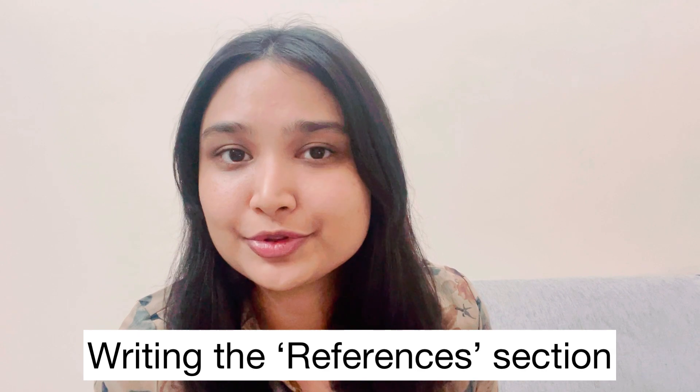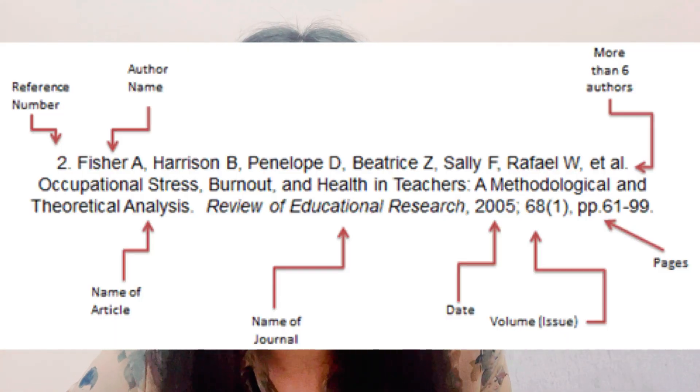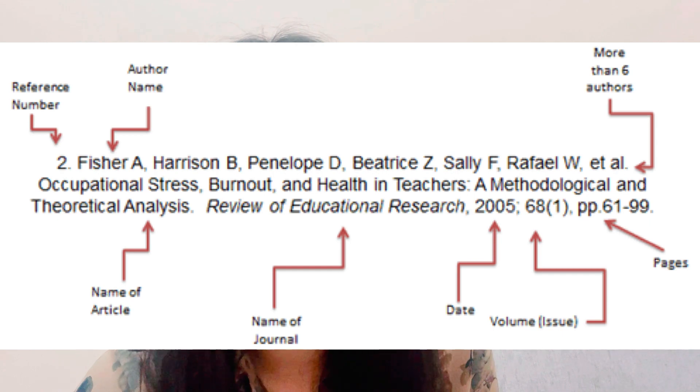Then comes references. Referencing is the last thing you're supposed to do — once you've finalized the manuscript, shown it to your seniors and faculty, all corrections have been made, and you've adjusted the word limit. List all cited references in the order they were cited in the report — this is very important. Always write references in Vancouver format; you can look up the internet for more details on that.